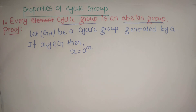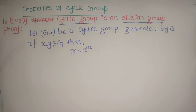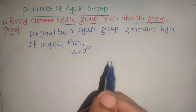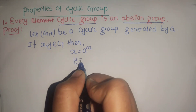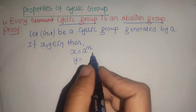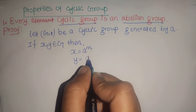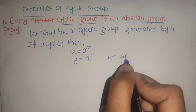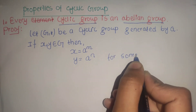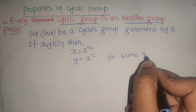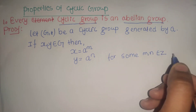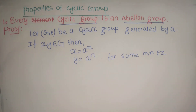As we know from the definition of cyclic group: x = a^m and y = a^n, for some integers m and n which belong to the integer set ℤ.